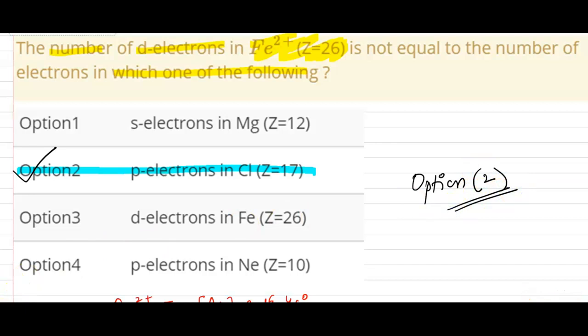If we see the third option, Fe: what will be the electronic configuration? Argon 3D6 and 4S2. So these are 6 d electrons, right? So this also matches with 6 d electrons of Fe2+.